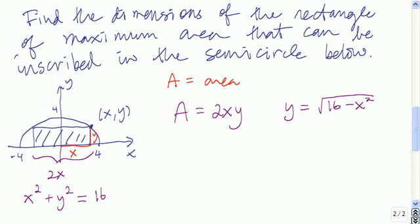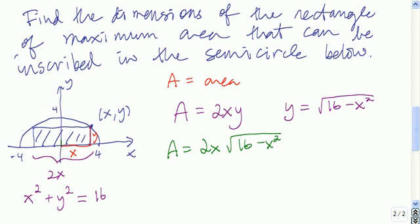So this is our constraint. Next, we substitute the value of y into the primary equation so that the primary equation has just one variable, and we can use single-variable calculus to find the maximum. The next thing to do is write the feasible domain. x can range from 0, in which case the area is 0, all the way to 4, in which case again the area is 0. So here we have our primary equation and our feasible domain.